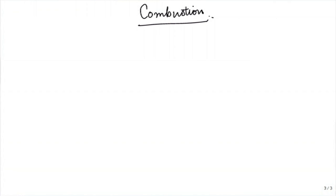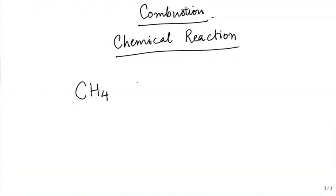We must remind students that combustion is finally a chemical reaction, which they have learned in 11th and 12th standard. The first thing we can address is the balancing of reactions. The simplest species to start with is methane — CH₄. We require some amount of O₂ and will get CO₂ plus H₂O. Every element on the right-hand side and left-hand side has to be balanced.